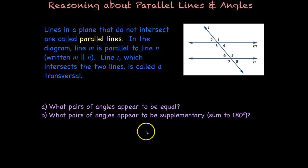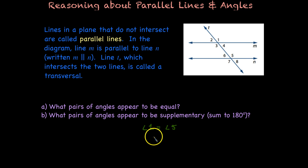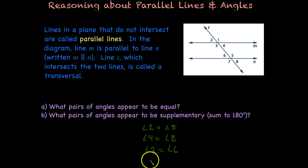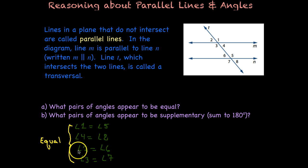As you'll notice, it appears that angle one is equal to angle five — they seem like they are about the same; they both look bigger than 90 and they look the same. How about four and eight? It looks like angle four is also equal to angle eight. And then we could look and say that angle two is probably equal to angle six, and angle three looks like it's equal to angle seven. So these appear to be equal.